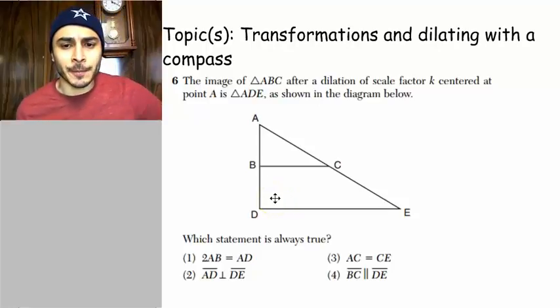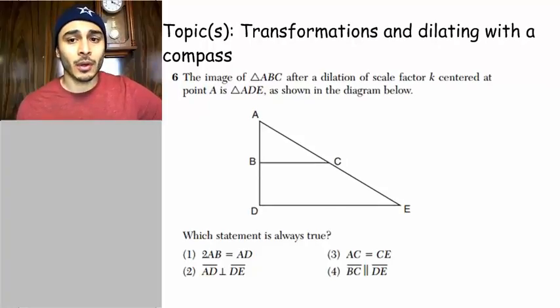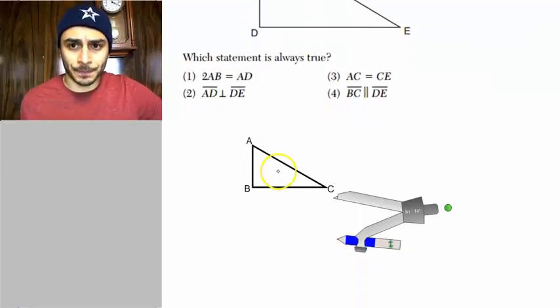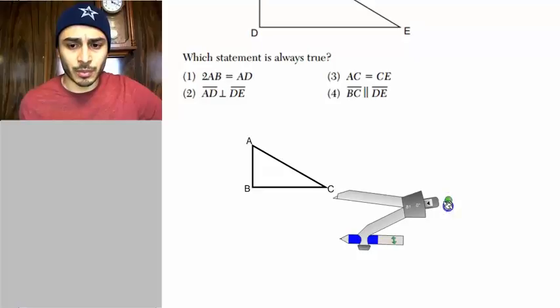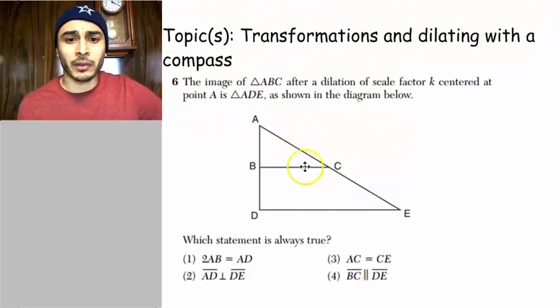The image of triangle ABC after a dilation of scale factor K centered at point A is triangle ADE, as shown in the diagram below. Which statement is always true? To answer a question like this, you really need to understand how we go about dilating an image with a compass. I'm going to go ahead and do that for illustration purposes. So here we have triangle ABC, the triangle we started with.